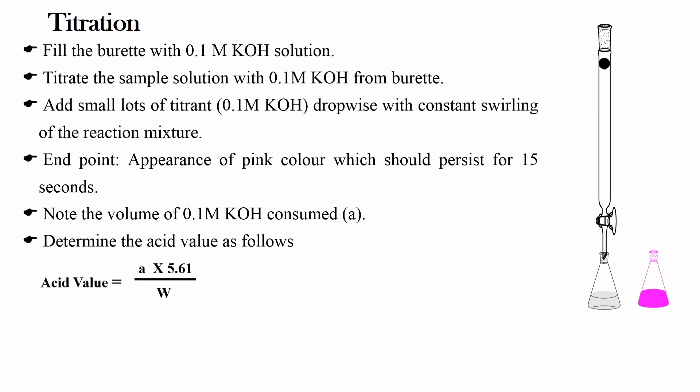Acid value is equal to A into 5.61 divided by W. Where A is the ml of 0.1 molar potassium hydroxide consumed during titration. And W is the weight of the sample taken.